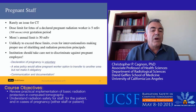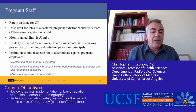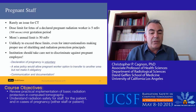Lastly, pregnant staff. This is rarely an issue for CT because the scan room is shielded and you can stand in the control booth with very small exposures. For those who must be in the procedure room: the dose limit for the fetus of a declared pregnant radiation worker is 5 millisievert (500 millirem) over the gestational period — compared to mom's annual limit of 50 millisievert. It's very unlikely anyone would exceed these limits if they make proper use of shielding and the radiation protection principles discussed. Institutions should take care not to discriminate against pregnant employees; declaration of pregnancy is voluntary. A wise policy allows a pregnant worker the option to transfer to another area with less radiation, but not make it obligatory. Communicate and document all discussions about pregnancy and precautions taken.